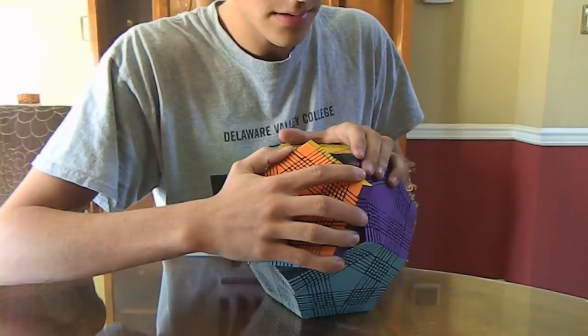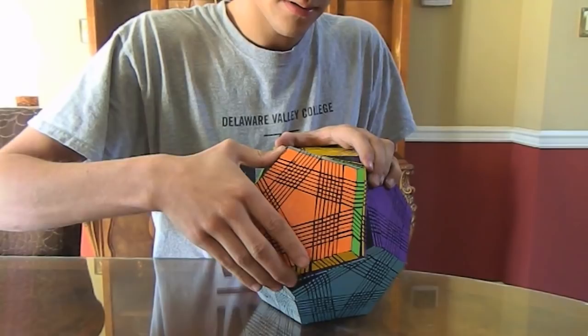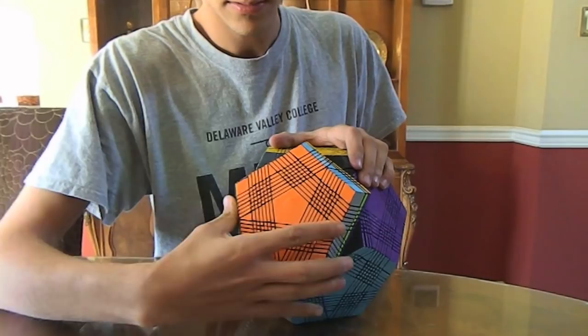It is seen next to a standard sized basketball. It has 2,943 functioning parts, and it is a dodecahedron equivalent of a 15x15x15 cube.